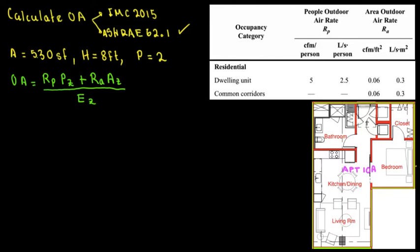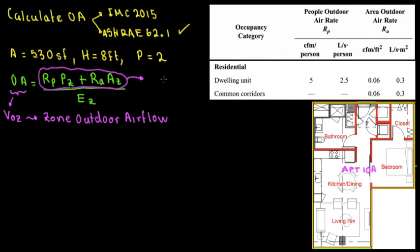But what is OA? Actually, OA is, in ASHRAE nomenclature, they call it as VOZ. VOZ, and VOZ is the Zone Outdoor Airflow. Let's just put that in here. This is the Zone Outdoor Airflow. And also, they call this equation, they call this, what they call in ASHRAE 6.2, based on the nomenclature, they call it VBZ, which is pretty much Breathing Zone Airflow.